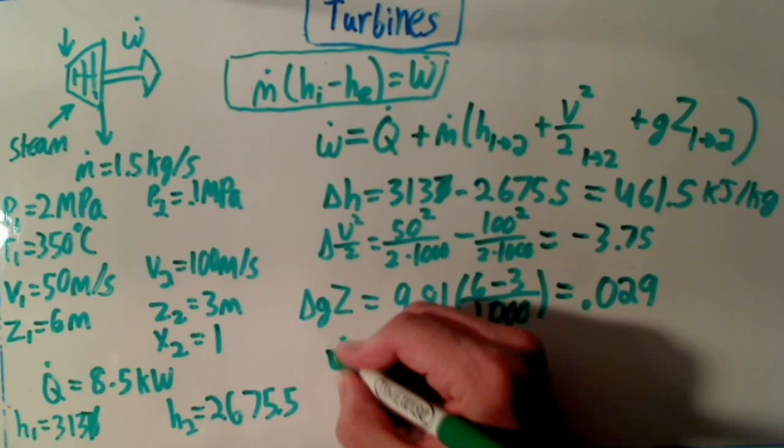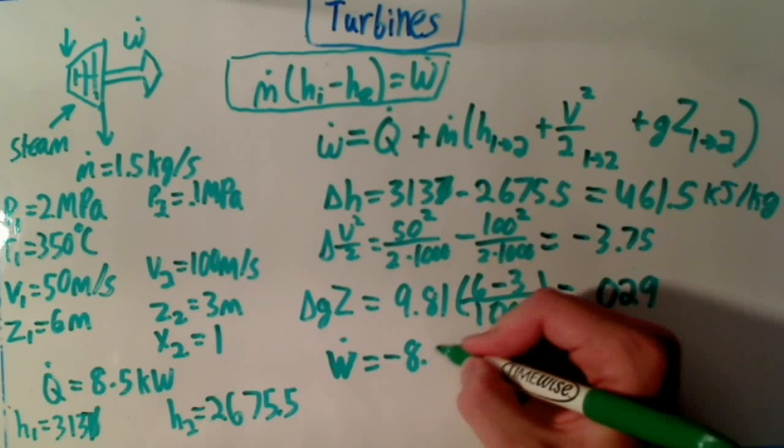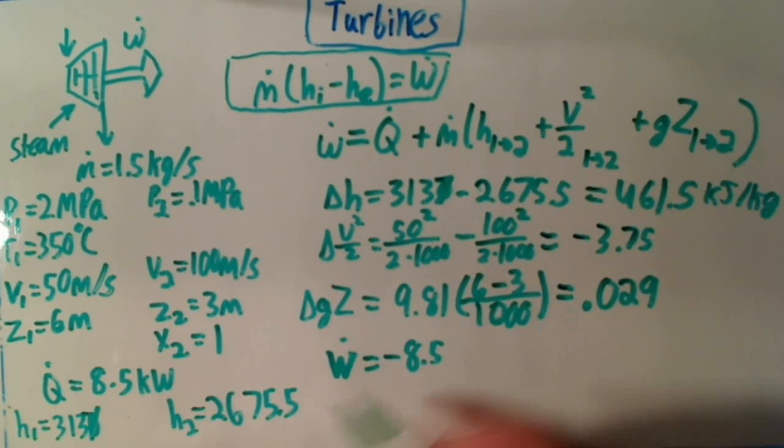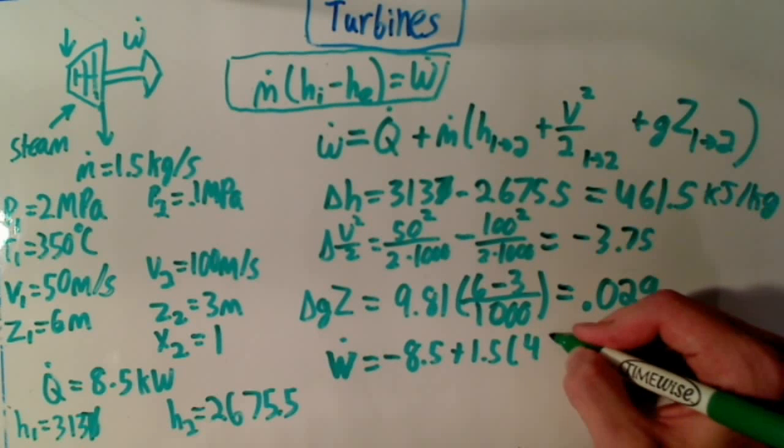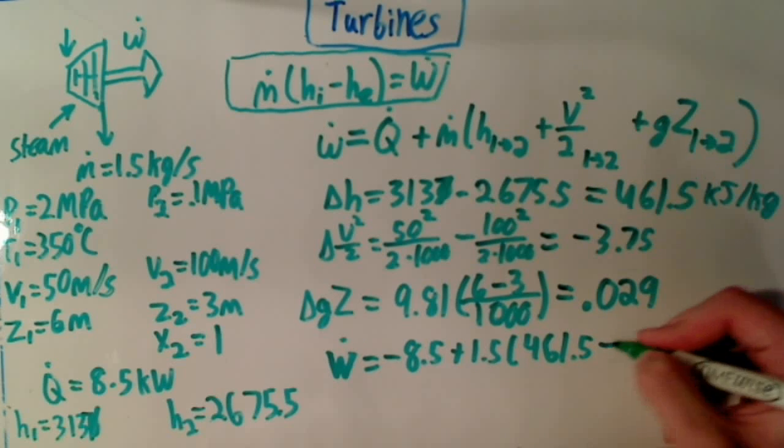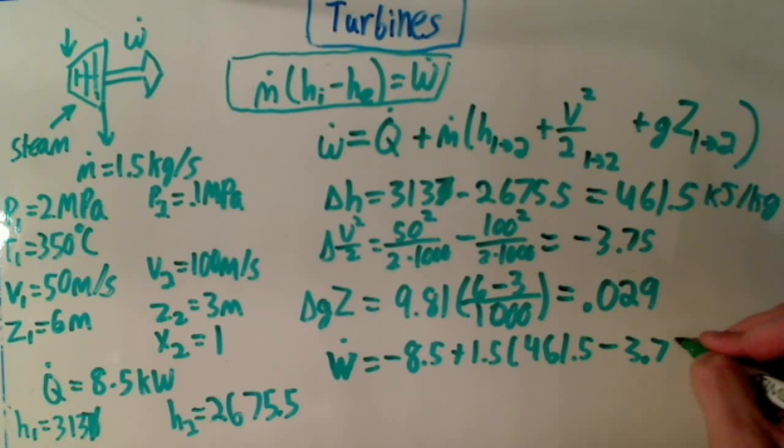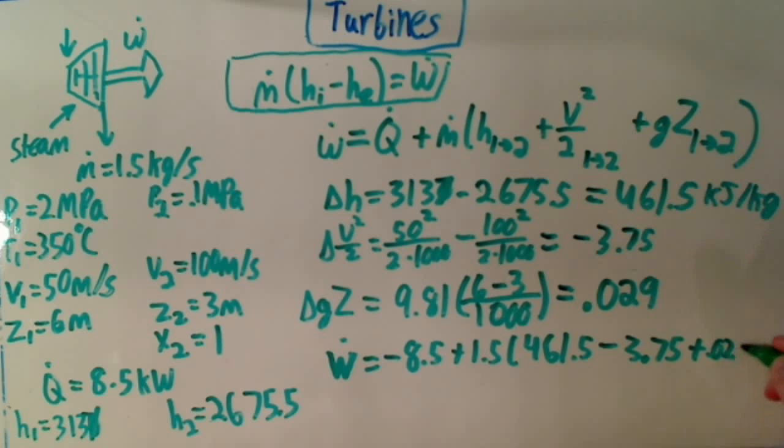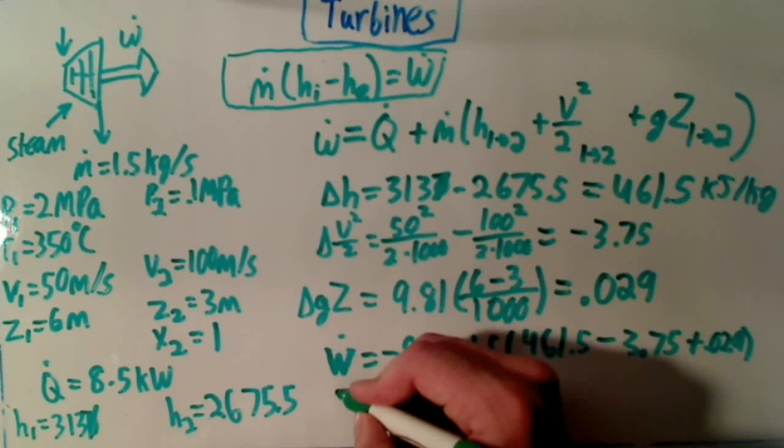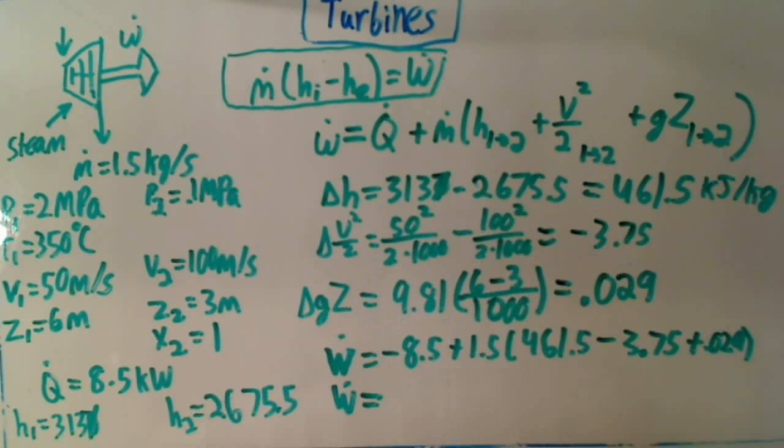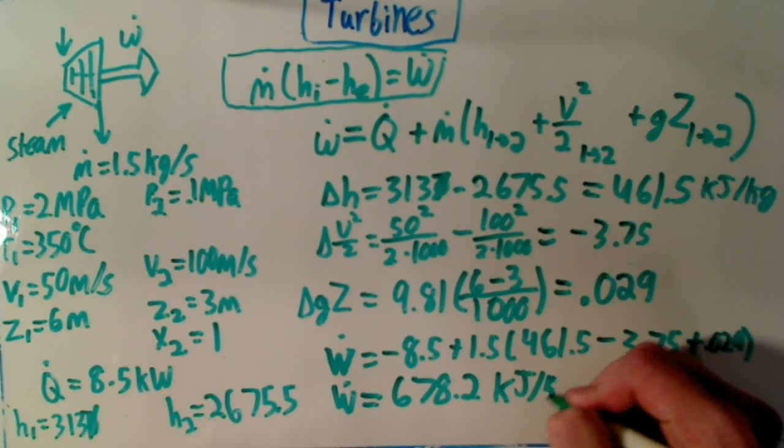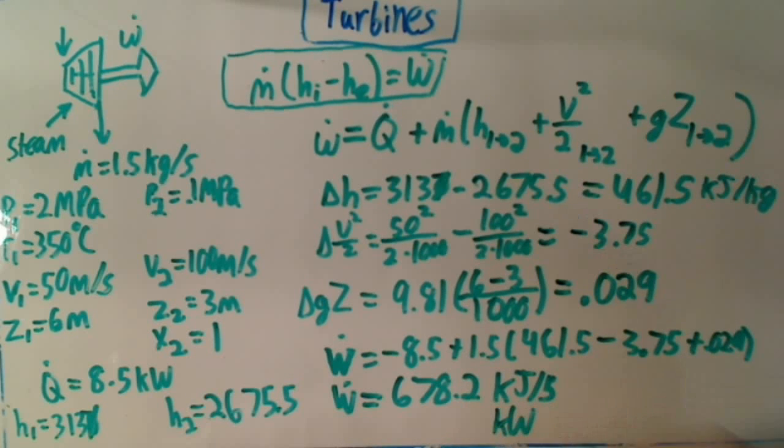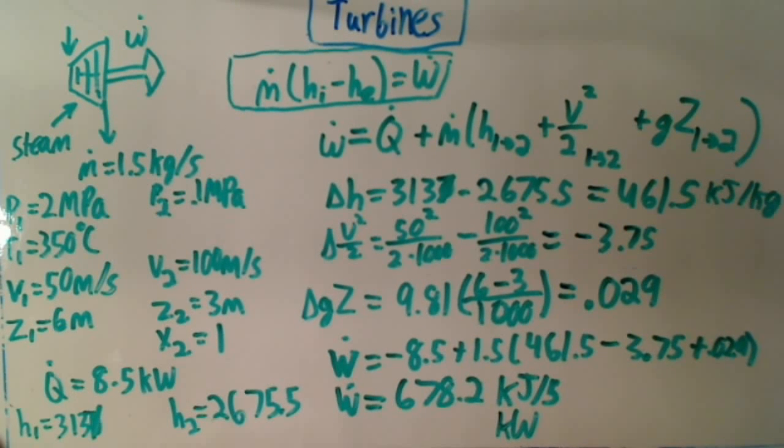So work is going to equal negative 8.5 kilowatts plus 1.5 times 461.5 minus 3.75 plus 0.029. If you do all the math out, work equals 678.2 kilojoules per second or kilowatts. And that's how you do a full problem with the entire first law of thermodynamics for turbine.